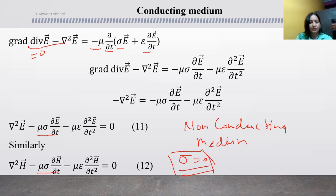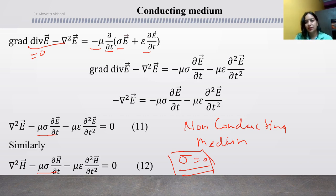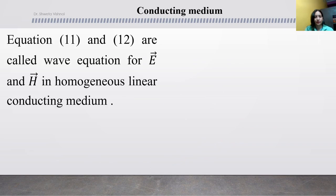Setting sigma to zero in the wave equations gives: del squared E minus mu epsilon del squared E over del t squared equal to 0. This is the differential wave equation for the electric field in a non-conducting medium. Equations 11 and 12 are called the wave equations for electric and magnetic fields in a homogeneous linear conducting medium.